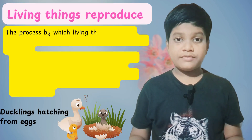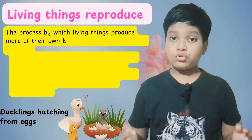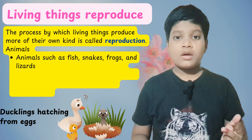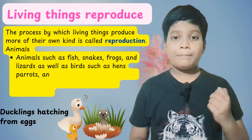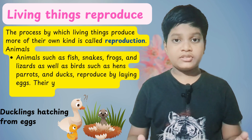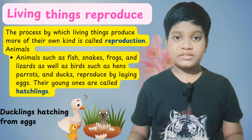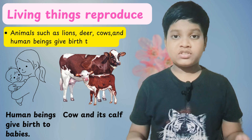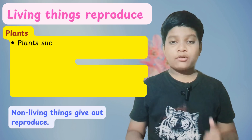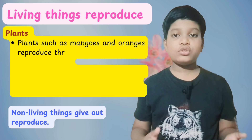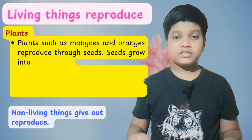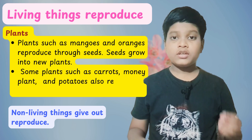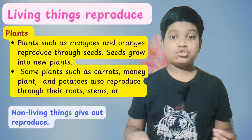Living things reproduce. The process by which living things produce more of their own kind is called reproduction. Animals such as fish, frogs, snakes, and lizards, as well as birds such as parrots, hens, and ducks, lay eggs. Their young ones are called hatchlings. Animals such as tigers, cows, deer, and human beings give birth to babies. Plants such as mangoes and oranges reproduce through seeds; seeds grow into new plants. Some plants such as carrots, money plant, and potatoes reproduce through their roots, stems, and leaves. Non-living things do not reproduce.